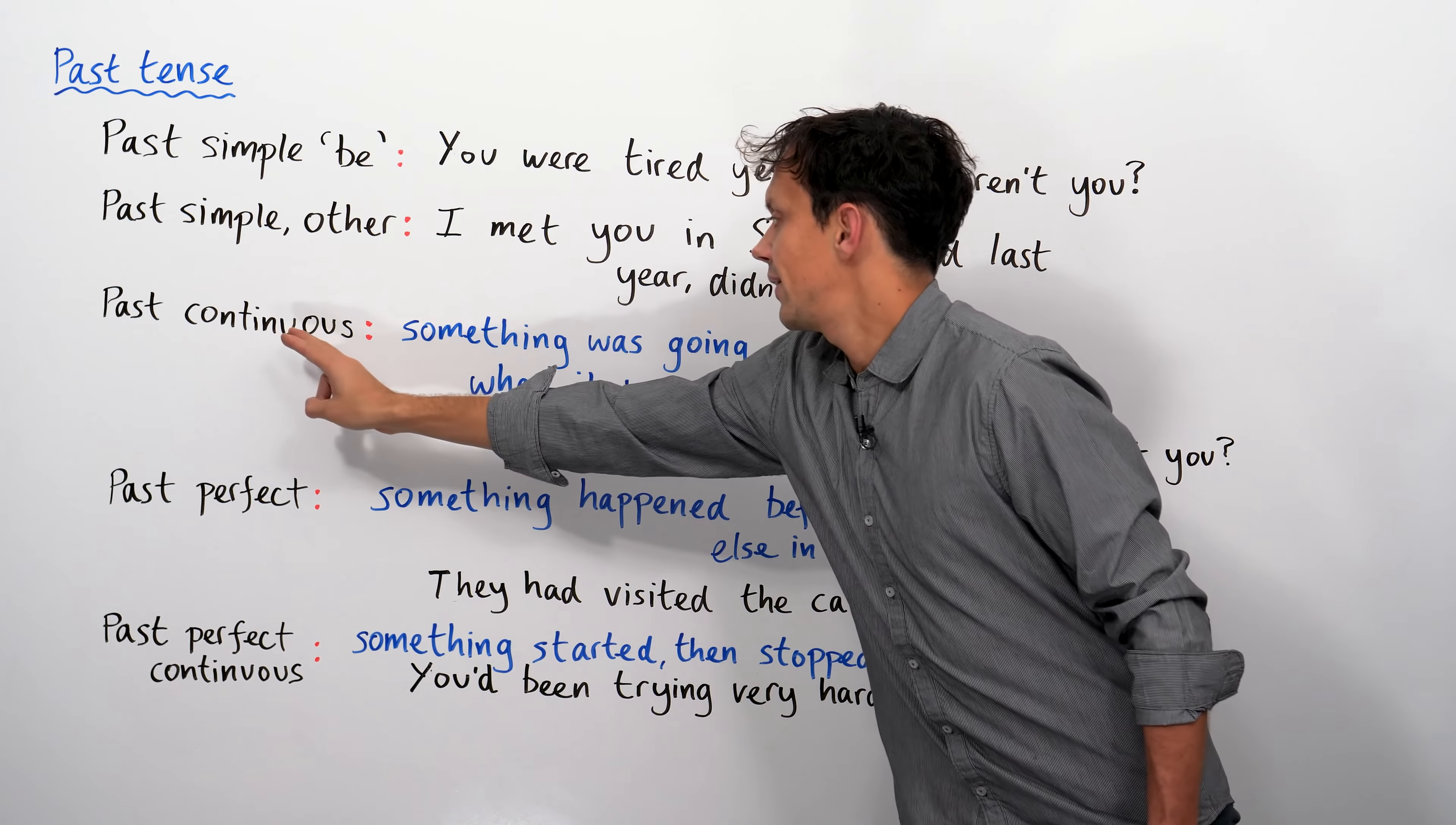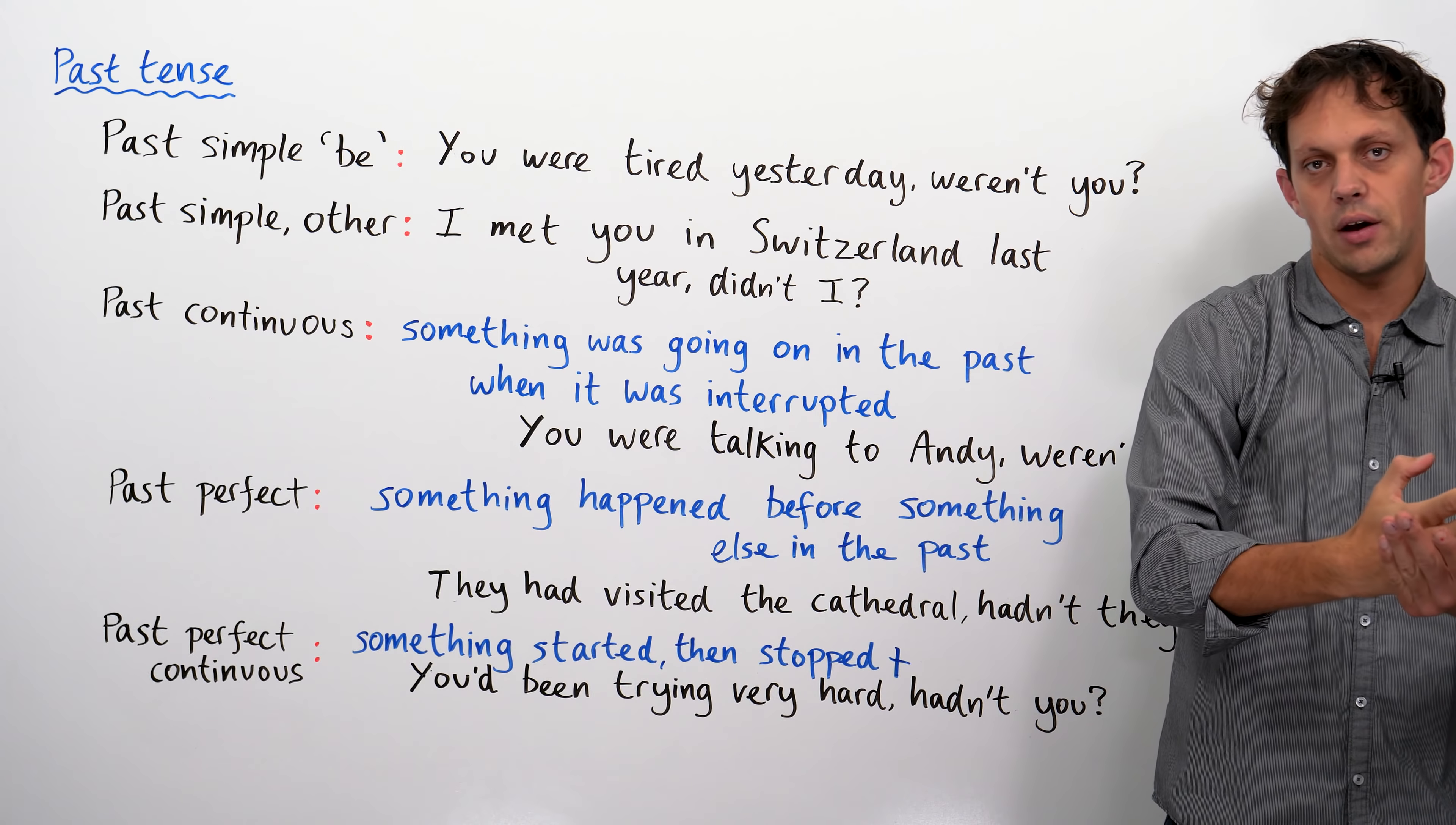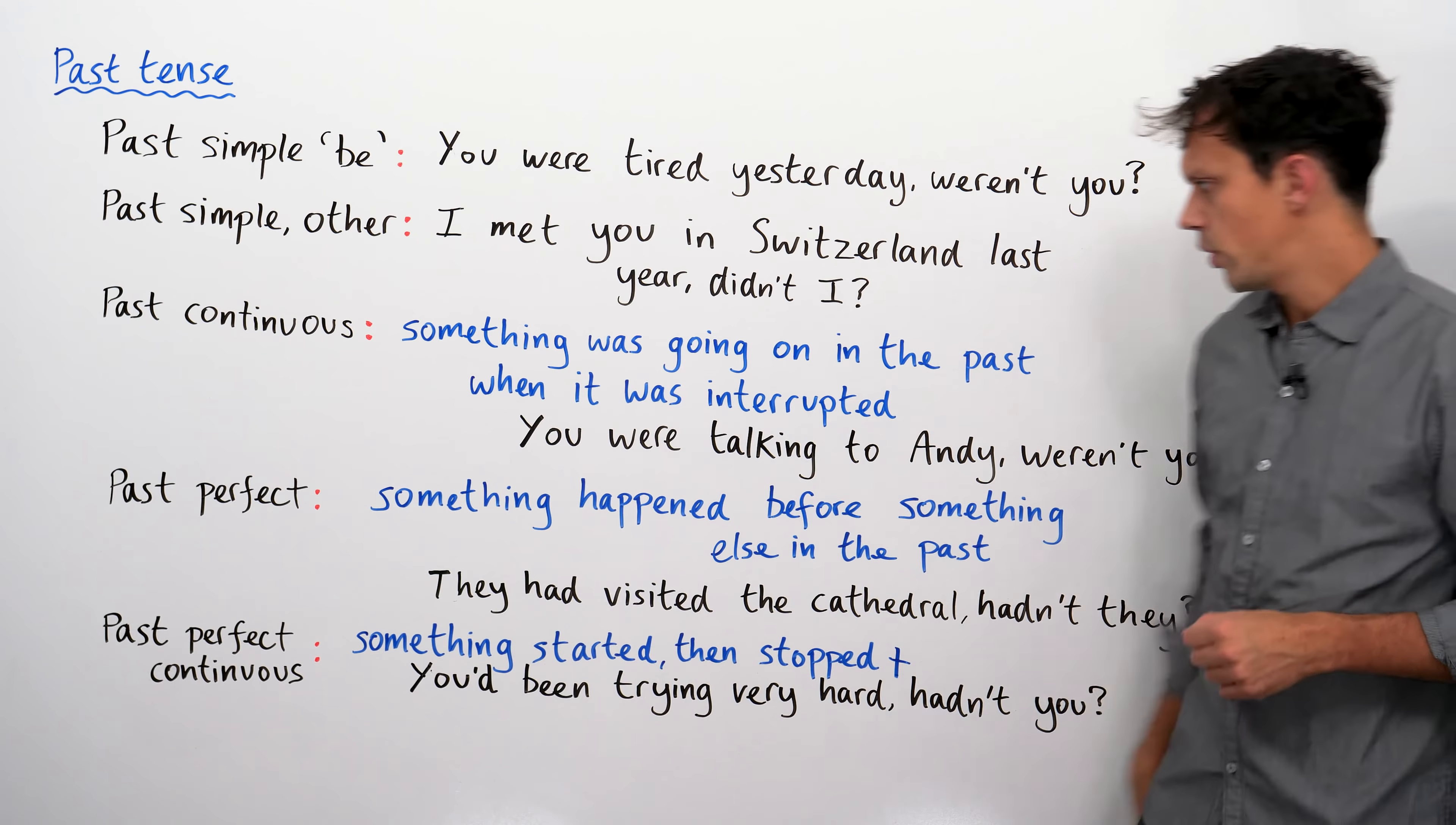The past continuous. Something, just to explain what the past continuous was, is, it's something that was going on in the past when it was interrupted. You were talking to Andy, weren't you, when maybe the phone connection cut out? I was talking to Andy, wasn't I? It's like I forgot what I was doing. I was talking to Andy, wasn't I? That stopped and something else continued. I was talking to Andy, wasn't I? Good. Moving on.